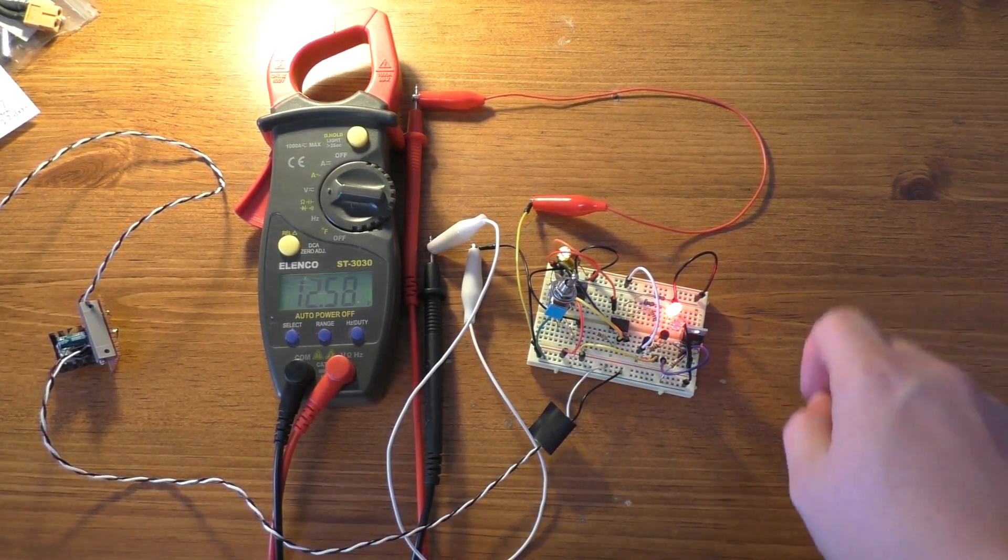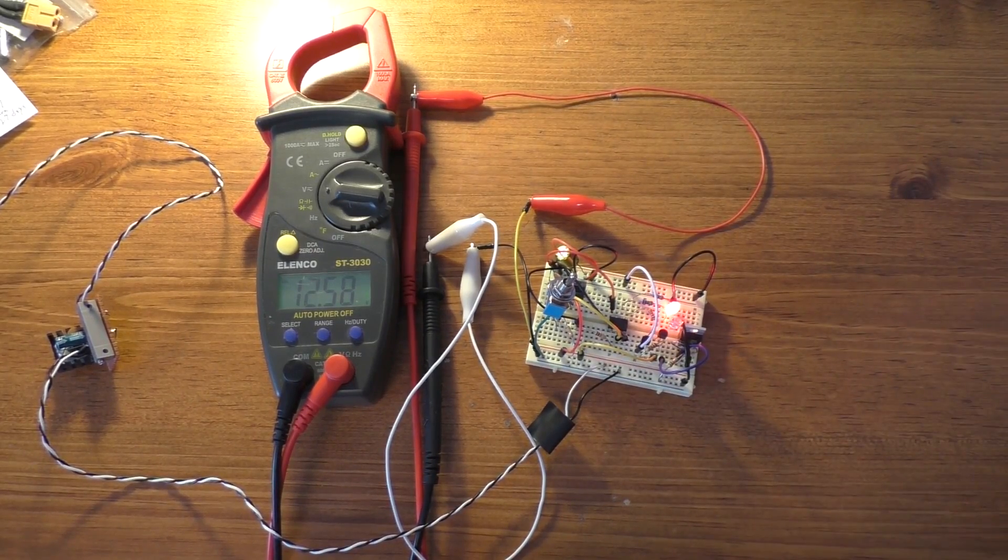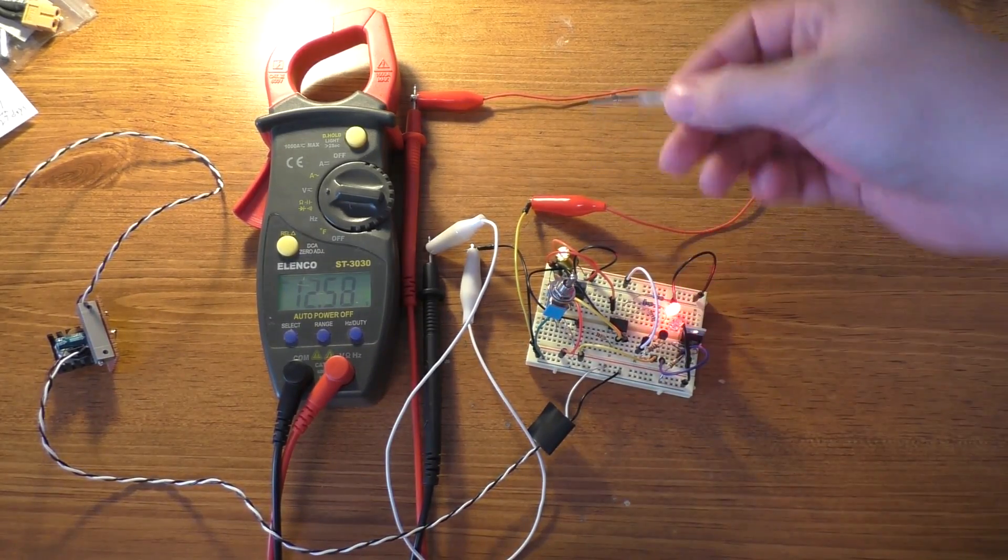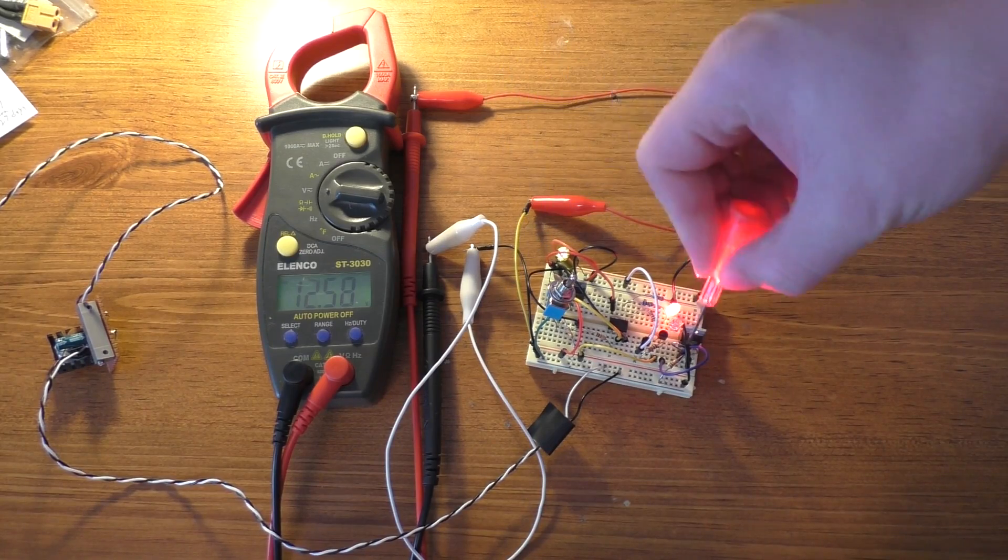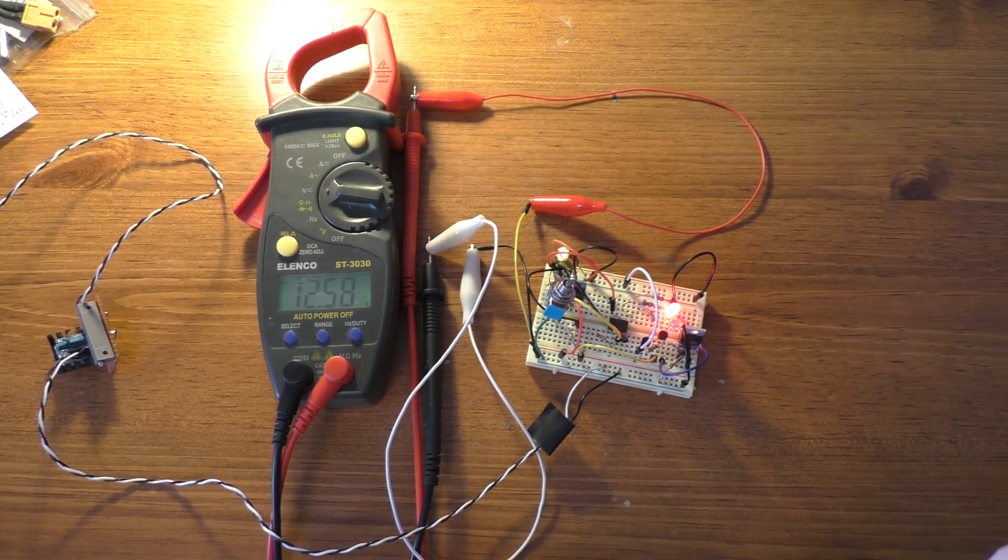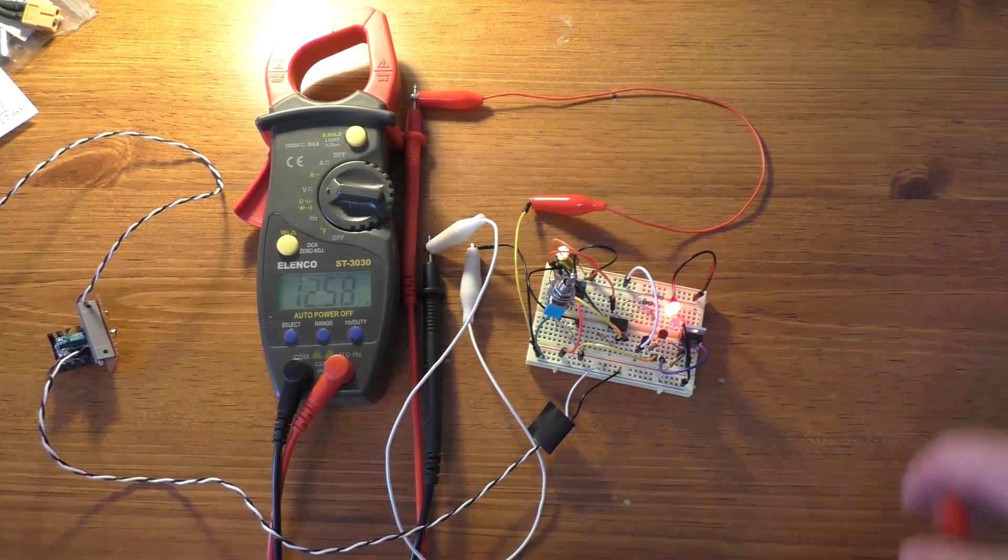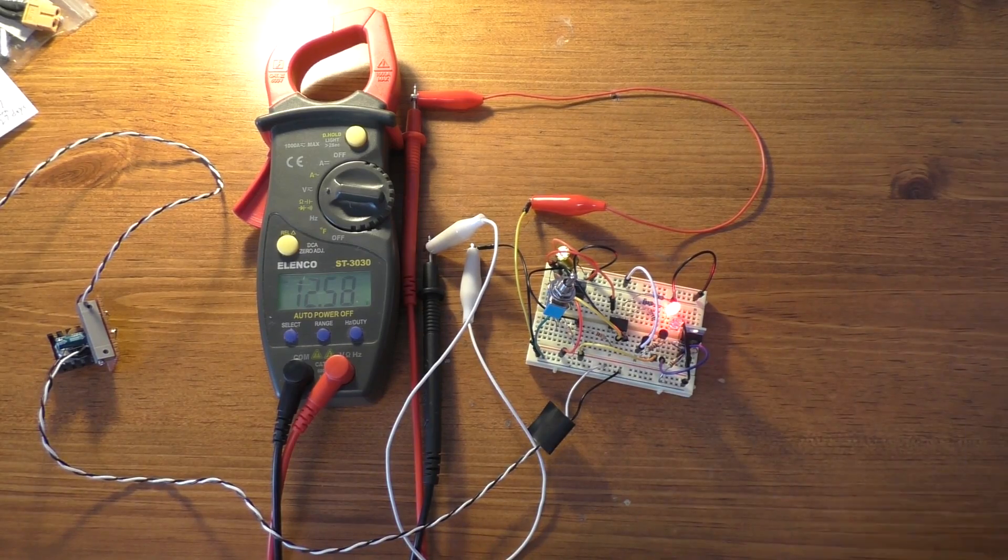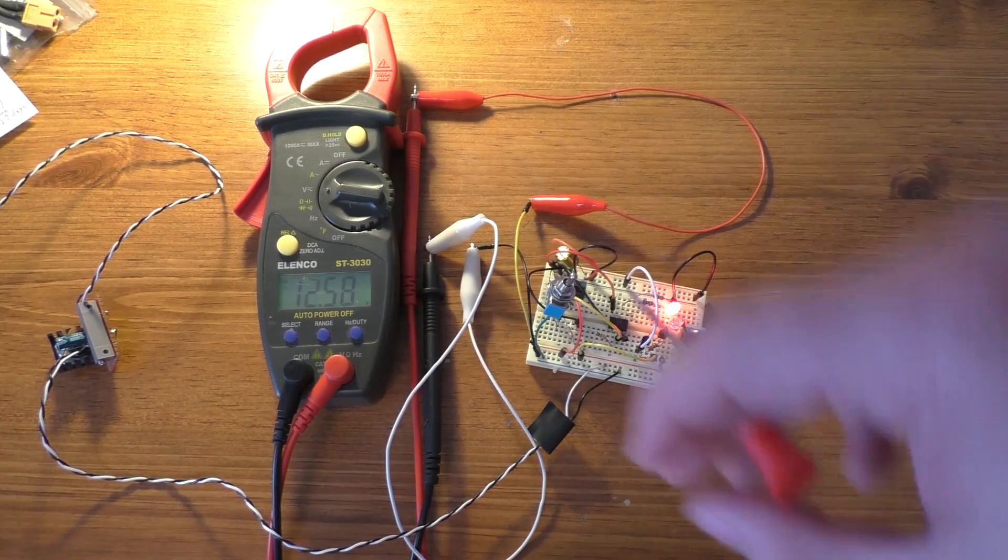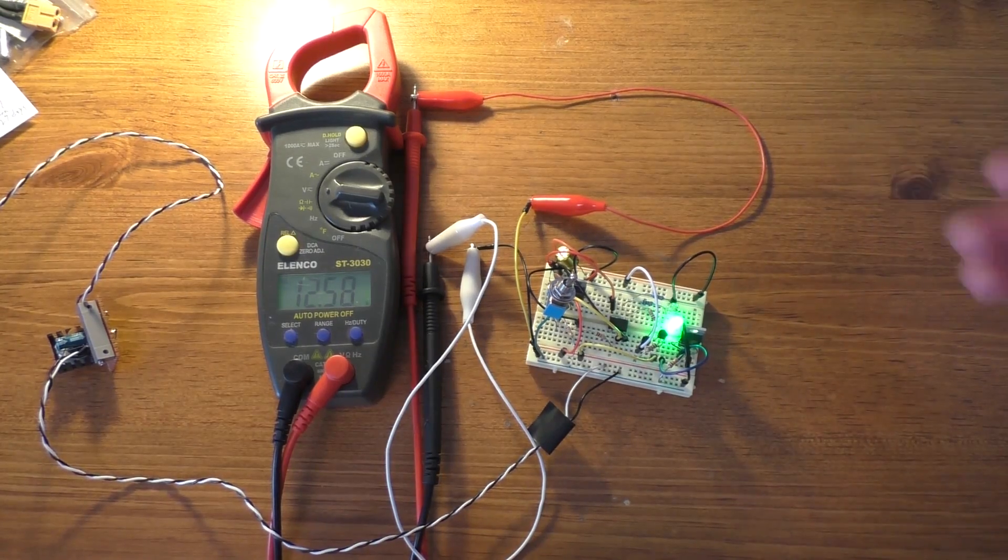Now, one thing that I should note about this is there's probably more than one way to build a circuit like this. For example, the way that I'm turning the ground off could probably be done differently. But I mean, it works. It seems to work well. It doesn't draw any current when I shut the switch off, which is what I was going for.